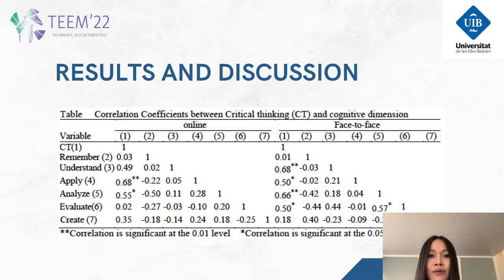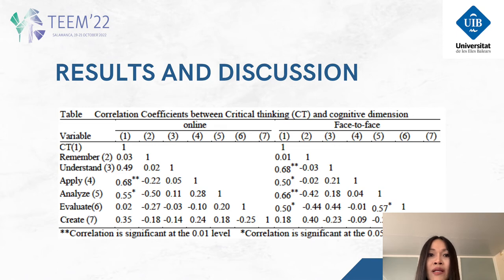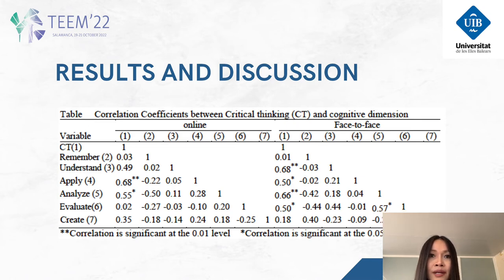This table presents the correlation between critical thinking and the cognitive dimensions of respondents in online and face-to-face formats. In the online format, applying correlated strongly with critical thinking, with a moderate correlation between analysis and critical thinking. In the face-to-face format, understanding and analysis correlated strongly with critical thinking, with moderate correlation between applying and evaluating.